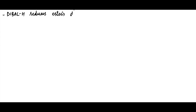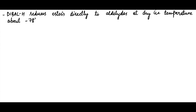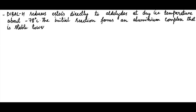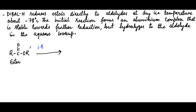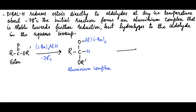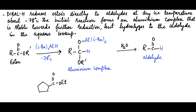Diisobutylaluminium hydride (DIBAL-H) reduces esters directly to aldehydes at dry ice temperature, about minus 78 degrees Celsius. The initial reaction forms an aluminium complex that is stable towards further reduction, but hydrolyzes to the aldehyde in the aqueous workup. For example, this ester in the presence of DIBAL-H first forms the aluminium complex, which hydrolyzes into the aldehyde. Similarly, another ester in the presence of DIBAL-H, followed by hydrolysis, forms the corresponding aldehyde.